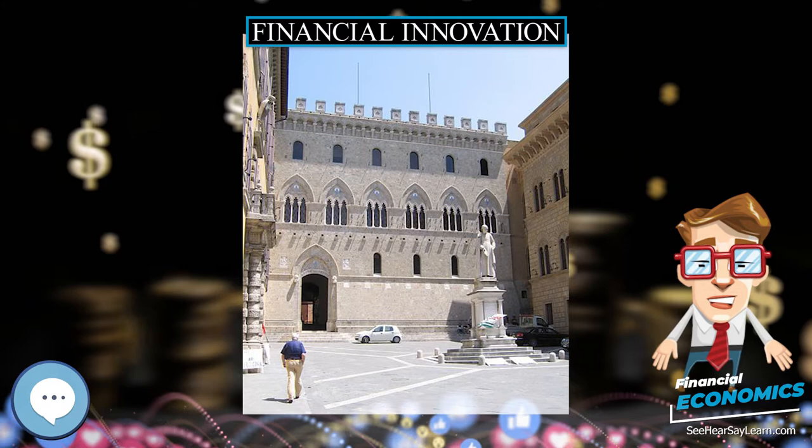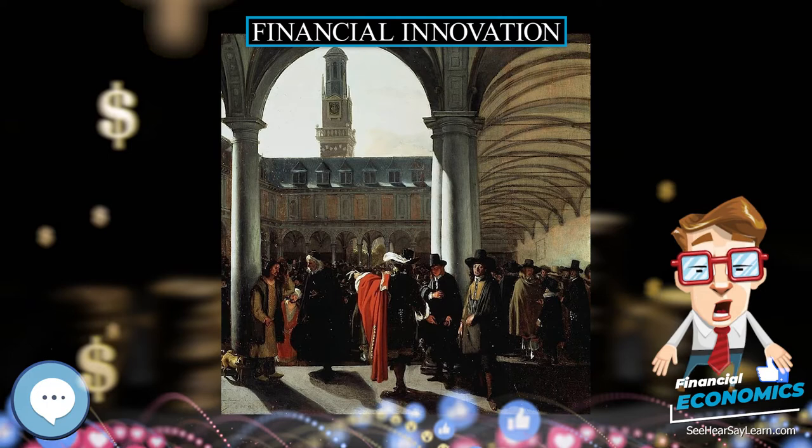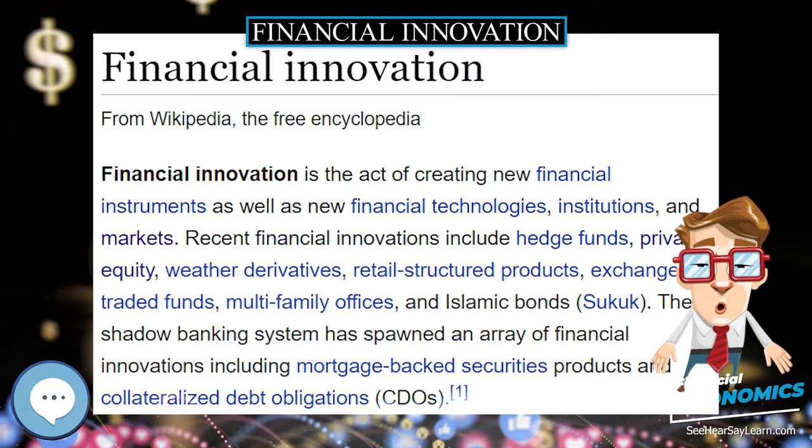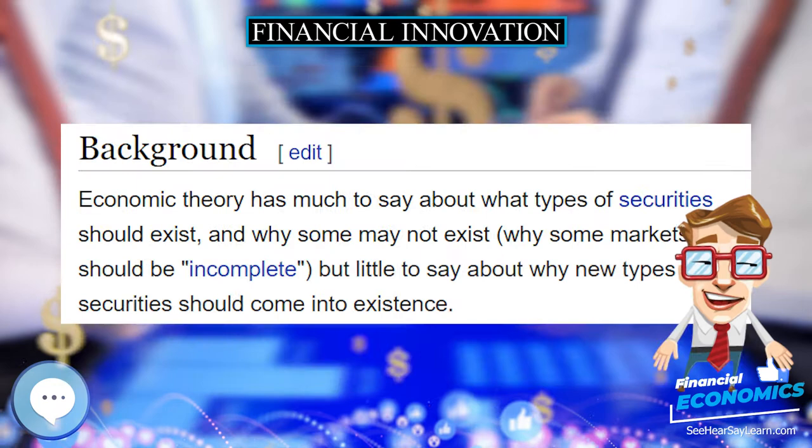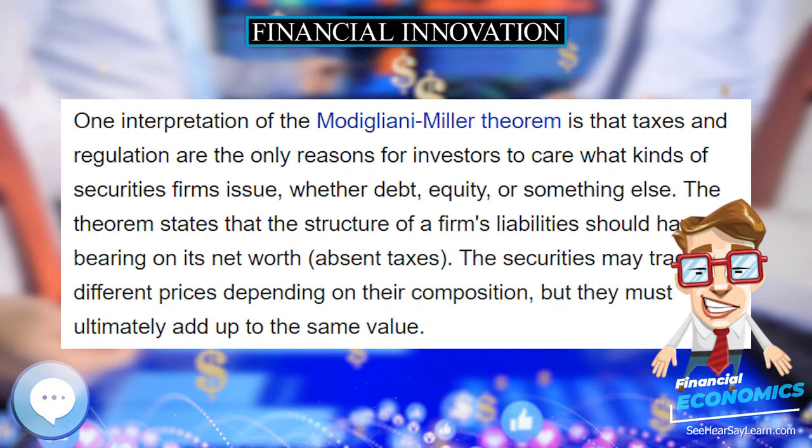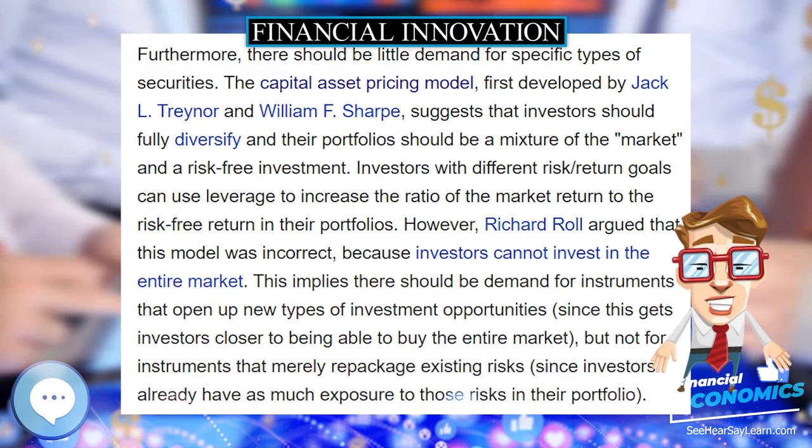Myers and Majluf (1984) develop an adverse selection model of equity issuance, in which firms, which are trying to maximize profits for existing shareholders, issue equity only if they are desperate. This was an early article in the pecking order literature, which states that firms prefer to finance investments out of retained earnings first, then debt, and finally equity, because investors are reluctant to trust any firm that needs to issue equity.